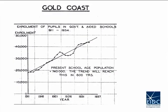These graphs were used in classes on educational planning in the 1930s. You see the years on the x-axis from 1911 through to 1937. And the enrollment of pupils in government schools and aided schools is on the y-axis, ranging from 0 to 50,000. It was calculated — I don't know quite how — but the record suggested that the present school-age population was 740,000. If you look at the numbers of children who were in school in 1911, in the school-age population, there were less than 20,000 children.